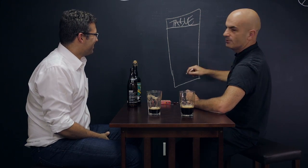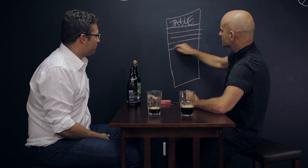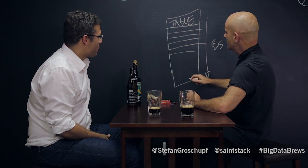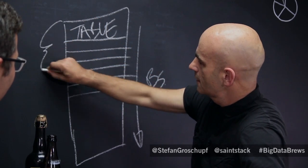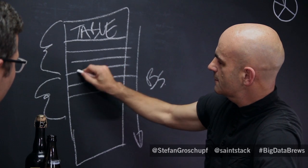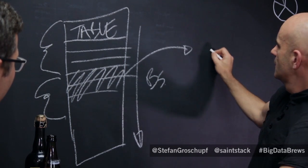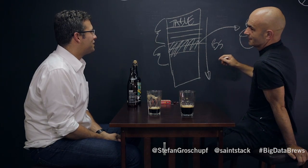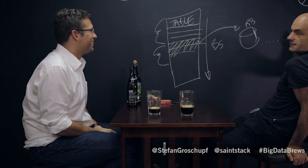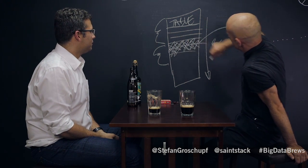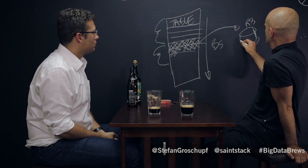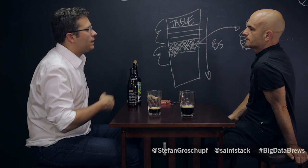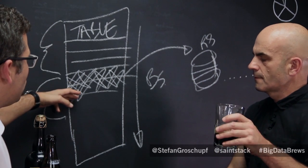You take that huge table and break it into pieces. Each piece gets put on a server — a region server. You can have many of those region servers, and each region server can hold many regions — potentially hundreds of regions per region server.